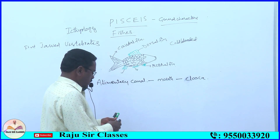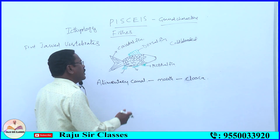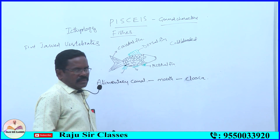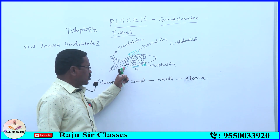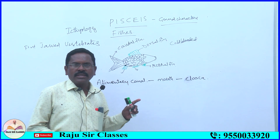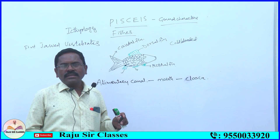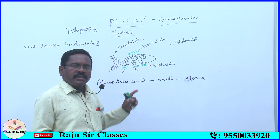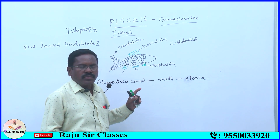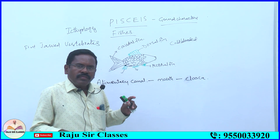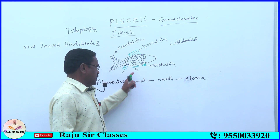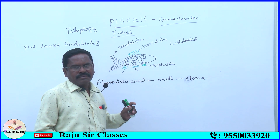The cloaca is a common aperture at the posterior end of the body — a pore-like structure through which the alimentary canal opens out. Ureters also open out through the cloaca, meaning urine is passed out through cloaca. Fecal matter is discharged through cloaca. Gonoducts also open into the cloaca.